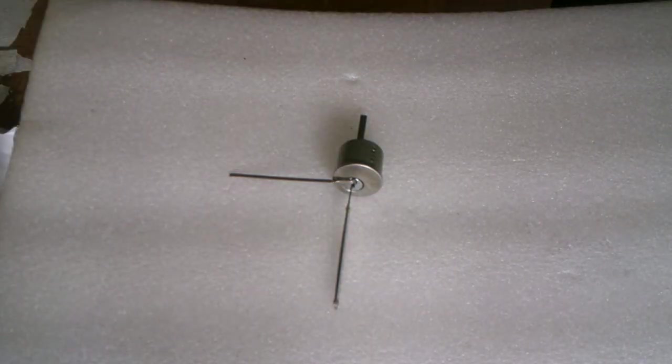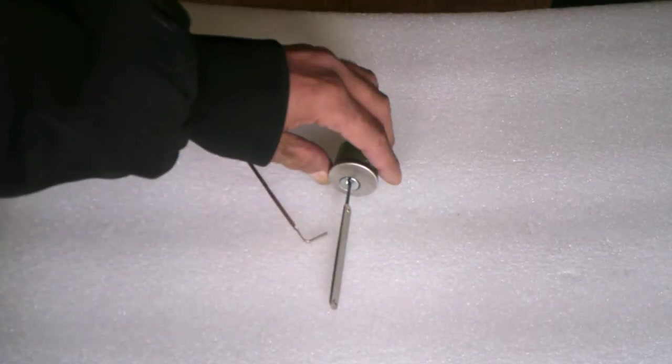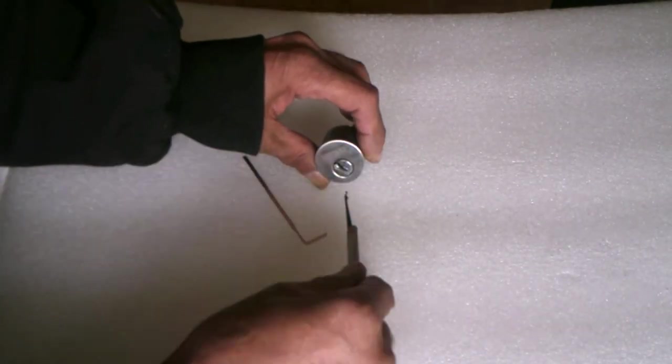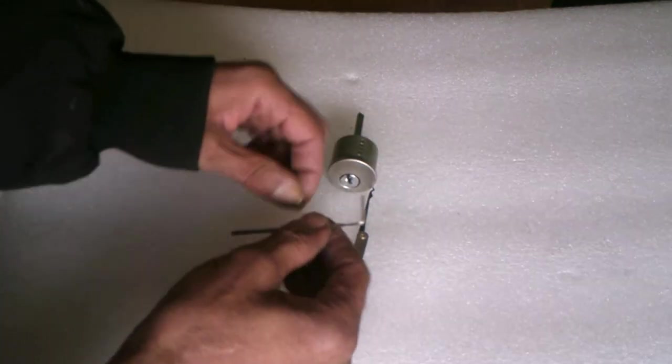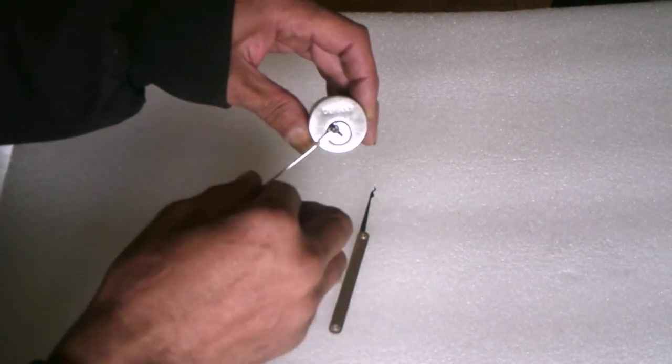That didn't even take ten seconds to pick the most popular lock that they sell for a house. With $2.50 worth of tools. See? That lock is open. See that cylinder turn, that lock is open.